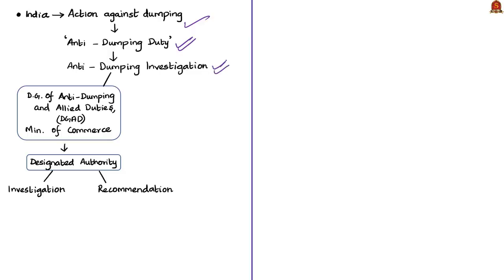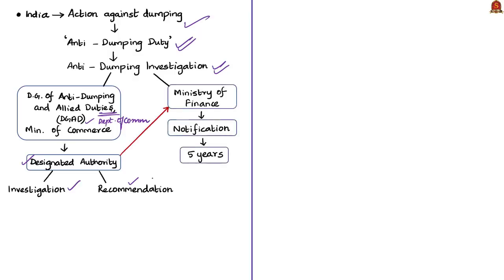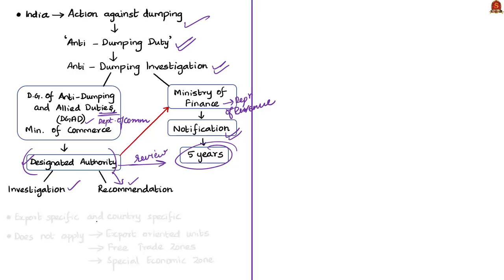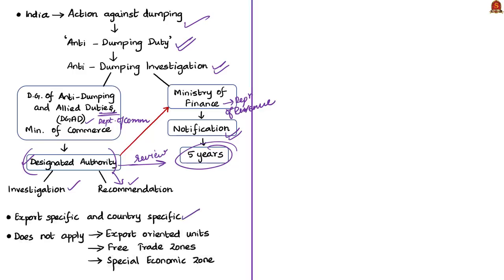This administration is headed by the designated authority, whose function is to conduct the anti-dumping investigation and make recommendations to the government. The duty is finally imposed by a notification of the Ministry of Finance. Thus, while the Department of Commerce recommends the anti-dumping duty, it is the Department of Revenue under the Ministry of Finance that levies it. The anti-dumping duty remains in force for five years from the date of imposition but can be reviewed by the designated authority before expiry. The levy is both exporter-specific and country-specific.